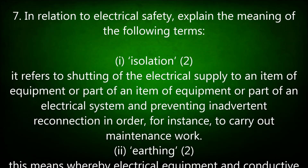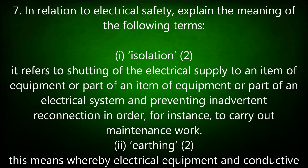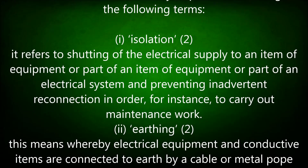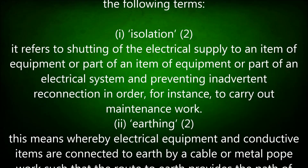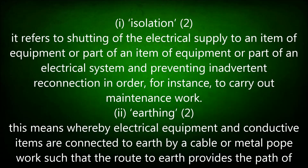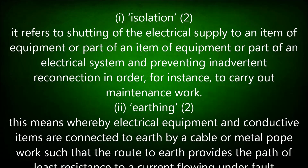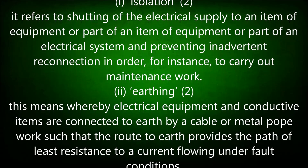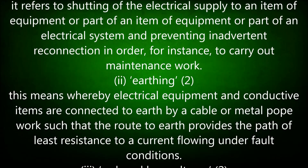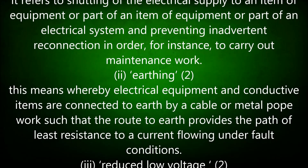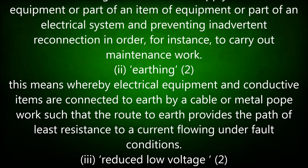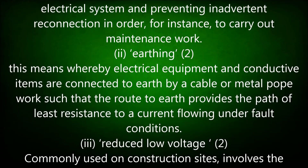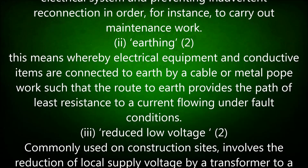Question 7: In relation to electrical safety, explain the meaning of the following terms. Isolation: it refers to shutting off the electrical supply to an item of equipment, or part of an item of equipment, or part of an electrical system, and preventing inadvertent reconnection — in order, for instance, to carry out maintenance work.